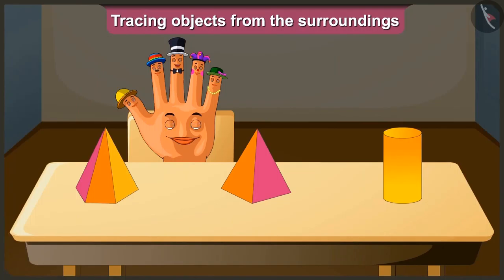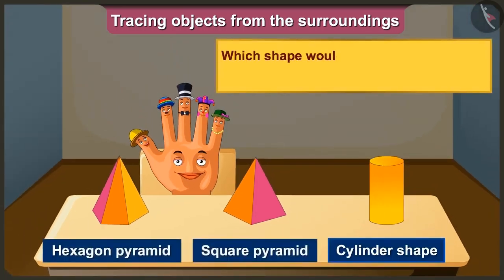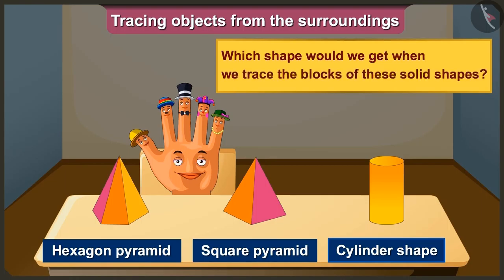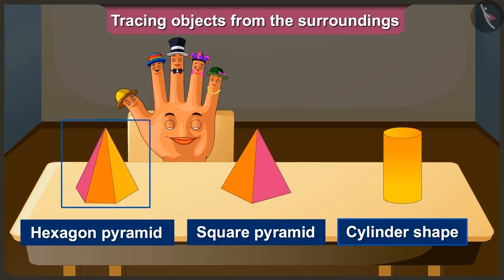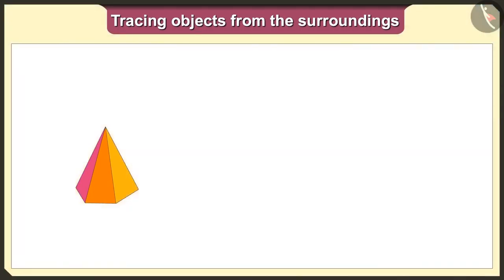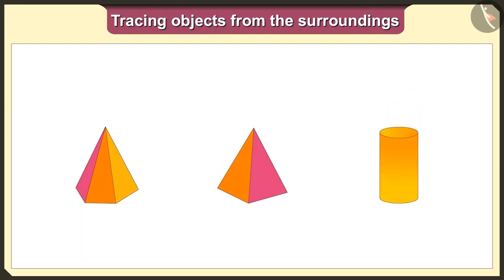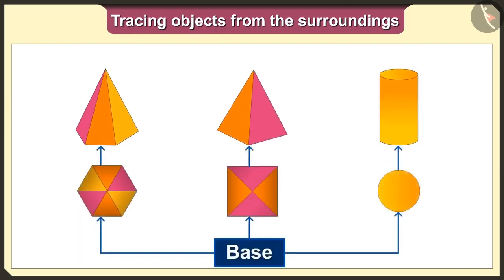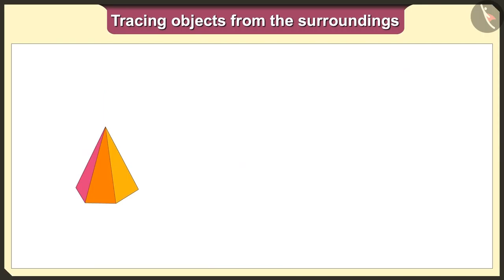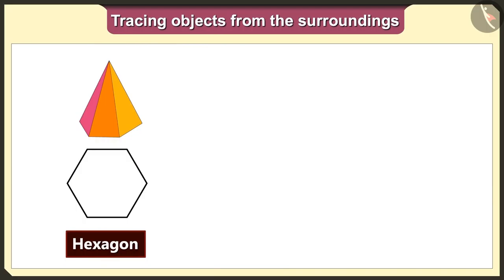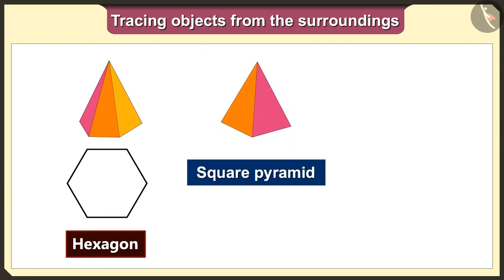Did you practice tracing of objects? Now tell me, which shape would we get when we trace these solid shaped blocks? First of all, we will keep a hexagon pyramid on a paper and trace it. The base of this hexagon pyramid is a hexagon. When we trace any object, the shape we get will be the same as the base. So when we trace this hexagon pyramid, we will get the hexagon shape.